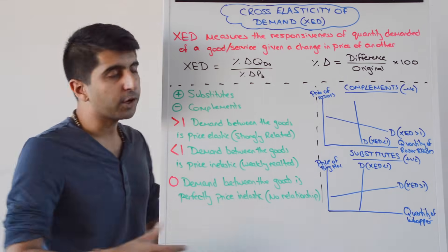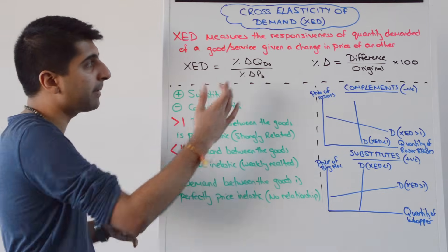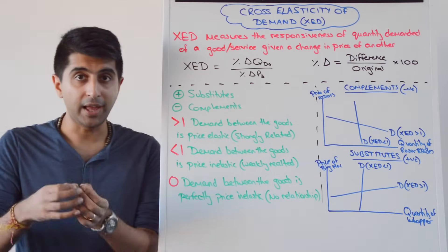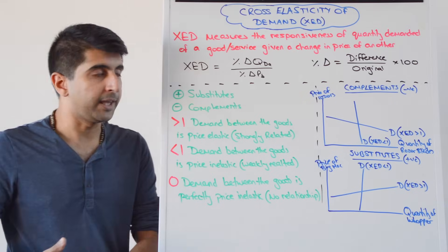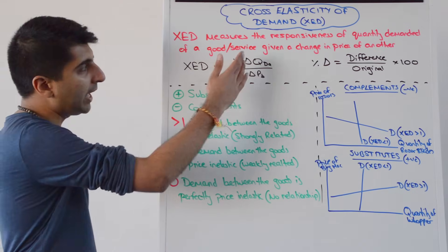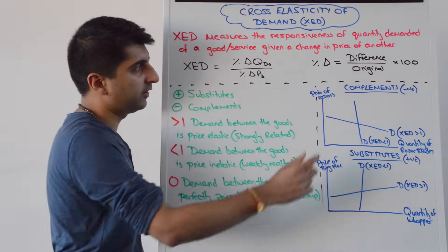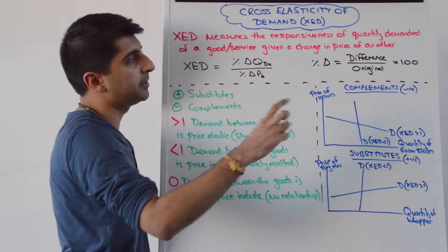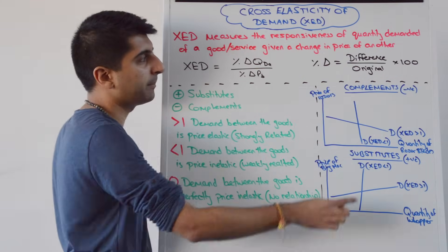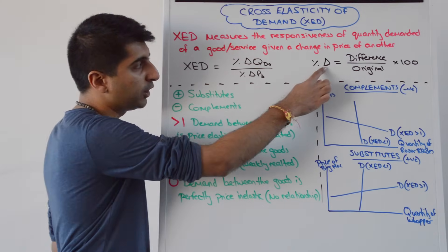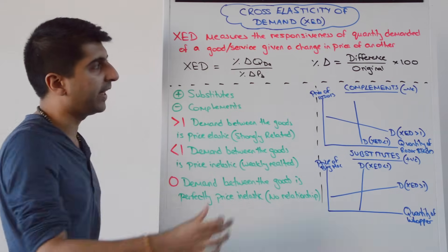Here is the equation for XED. It's the percentage change in quantity demanded of good A over the percentage change in price of good B. The equation for percentage change is the difference between two numbers over the original number times by 100. Once we know the percentage changes, we put them straight in there.